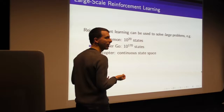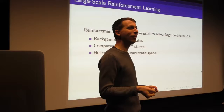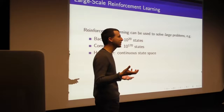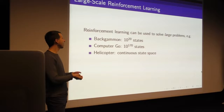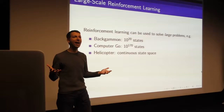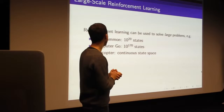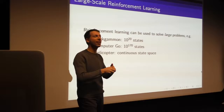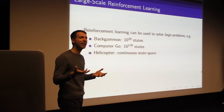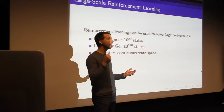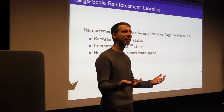Why are we interested in value function approximation? We'd like to use reinforcement learning to solve large real-world problems. To get a sense of scale: backgammon has 10 to the 20 states, Go has 10 to the 170 states, and robots in continuous state spaces have an uncountably infinite number of states. You can't just build a table anymore — having a separate value for each state just isn't practical and won't scale up to these interesting problems.